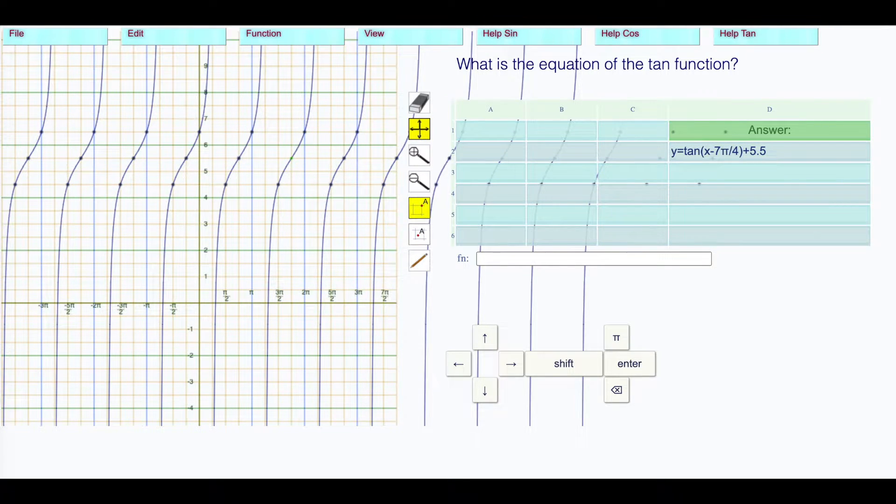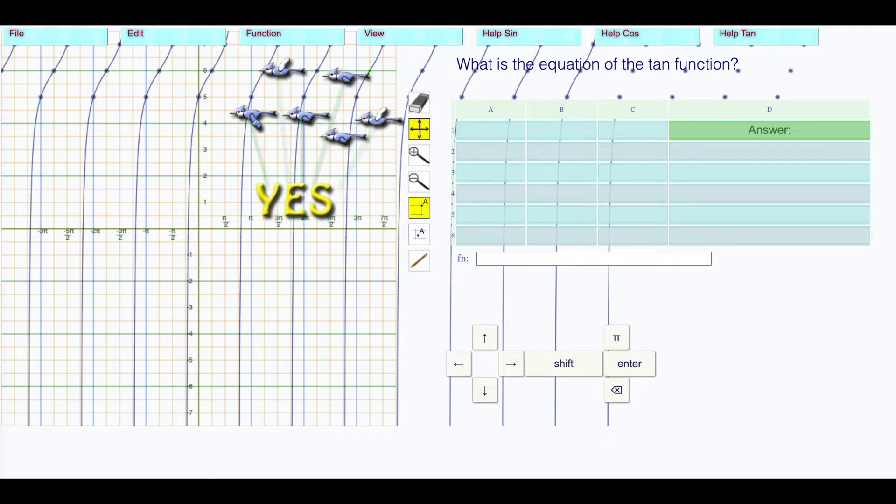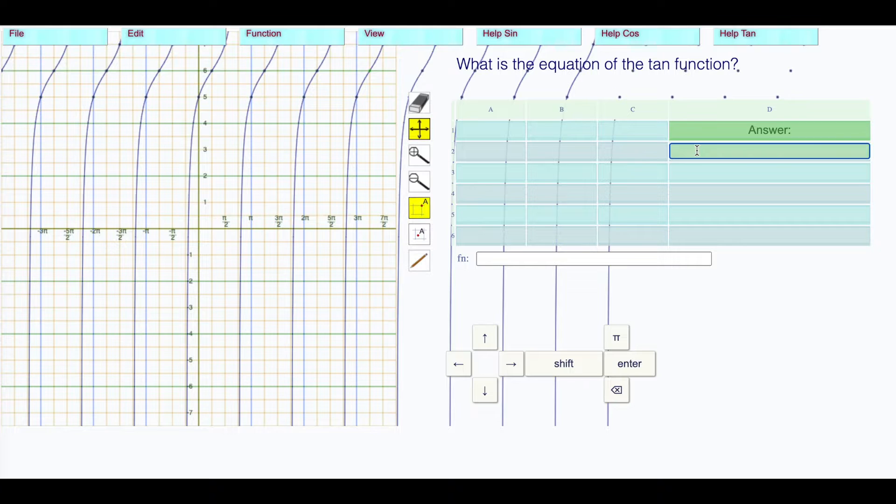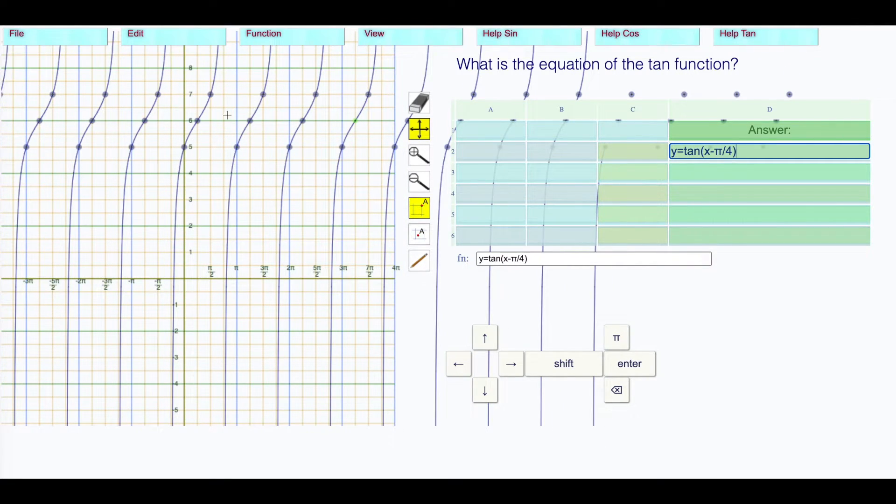Look at the most convenient point. It's been translated over by π/4. The h is positive π/4. Remember, it's x minus h, so y equals tangent of x minus π/4. Then plus the k—everything is lifted up by 6, which is the middle of the points here. So plus 6.